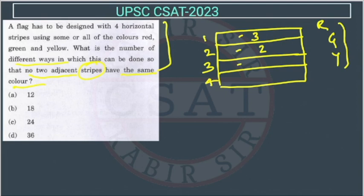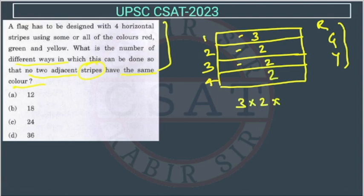For the third strip — say the first was red and the second was green — we can pick red or green again since the third strip only needs to differ from the second. So again two choices. Similarly, for the fourth strip, we again have two choices.